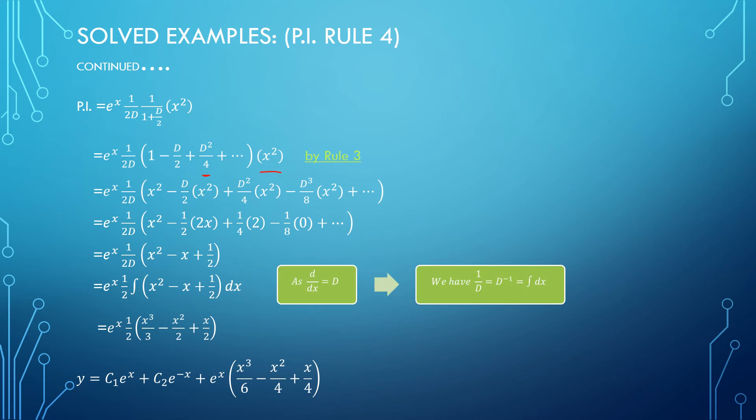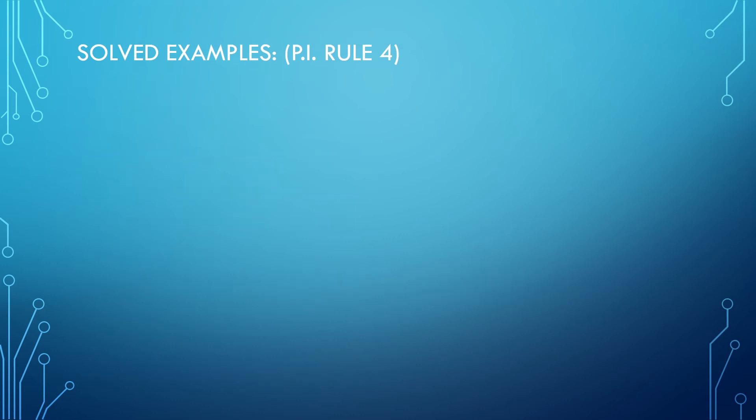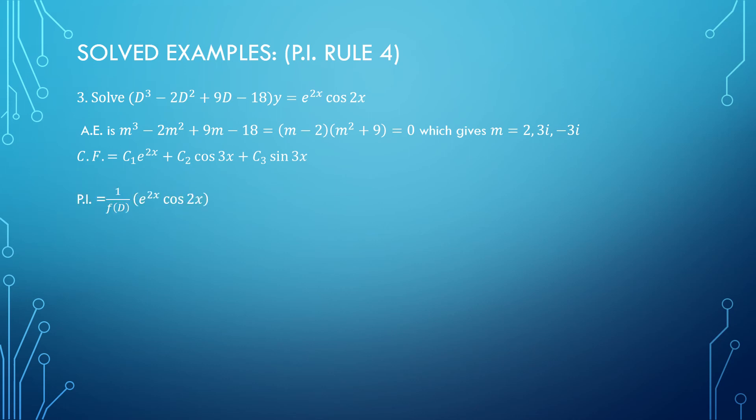I have taken one example for Rule 3 when we are operating on algebraic function, then one example on Rule 4 where we are operating over a combination of exponential and algebraic function. Now look at a question where we are working with exponential and trigonometric functions combination. I have obtained the complementary function. For particular integral, e to the power 2x will come out, and since 2 is multiplied with x, my d will be replaced by d plus 2.